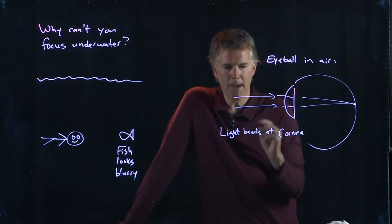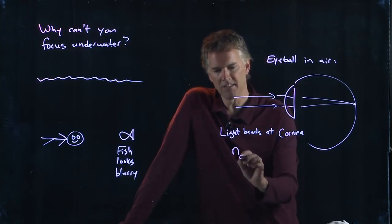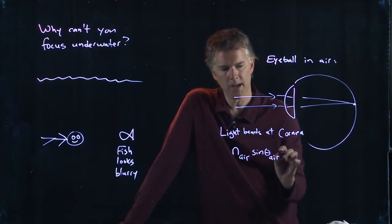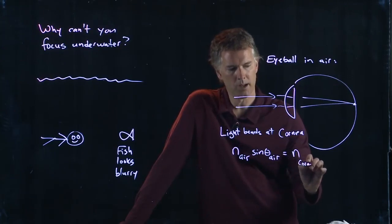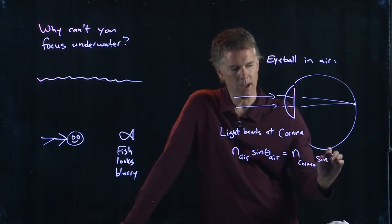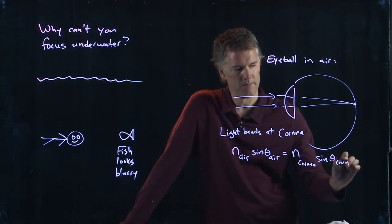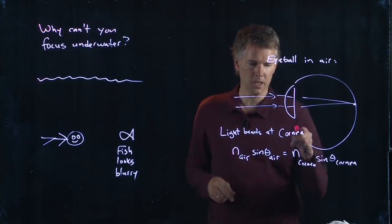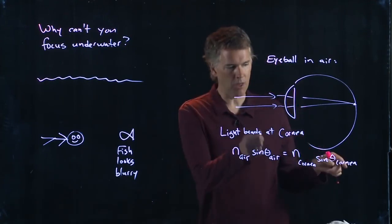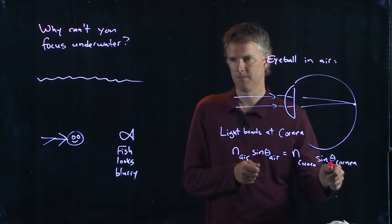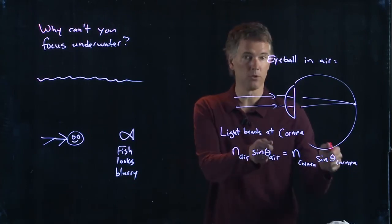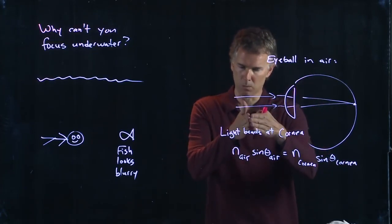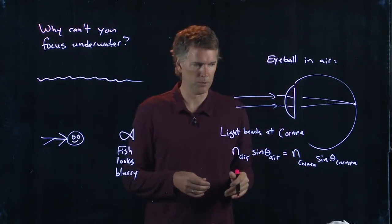Right? It bends because Snell's law says n air sine theta air equals n cornea sine theta cornea. And there is a different index of refraction between the air and the cornea. And that means that theta has to change. It's going to bend towards the normal. Since the cornea is curved, those parallel rays will bend inward towards their relative normals.